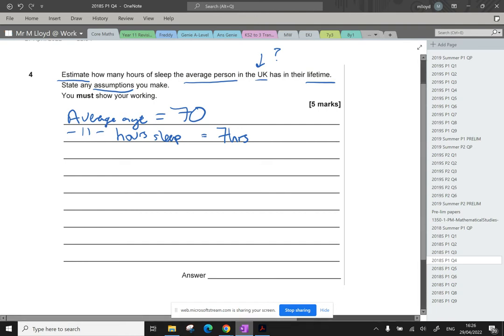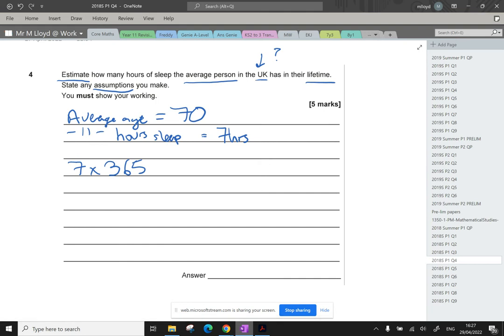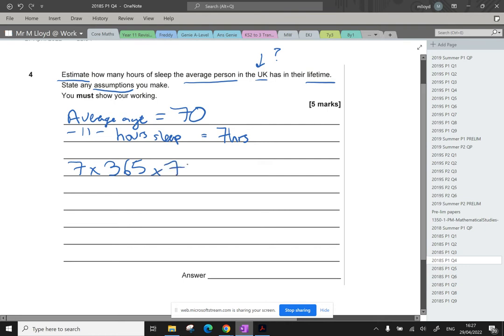We then need to get into the calculating. So we've got seven hours per day. There are 365 days in a year. That's going to give me the total amount of sleep in one year. And then we just multiply that by the average age.